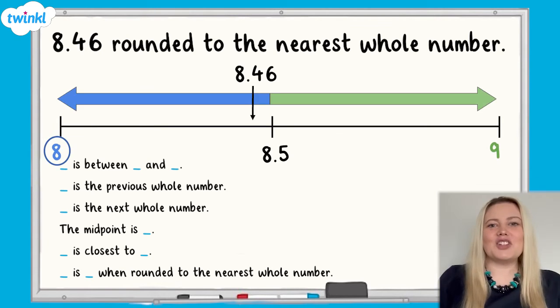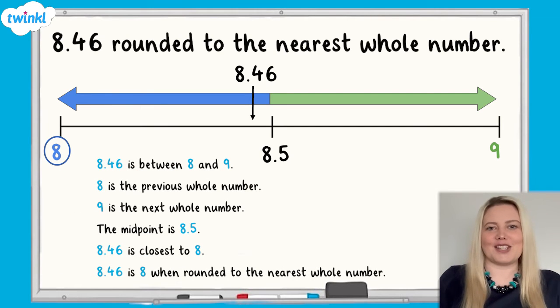Well done. You should have found that 8.46 is 8 when rounded to the nearest whole number.